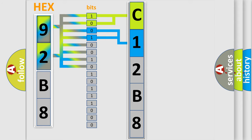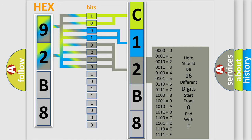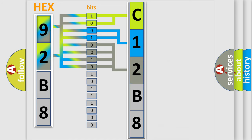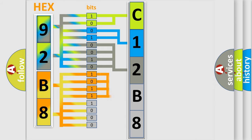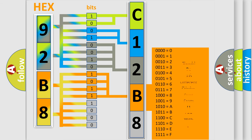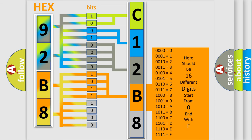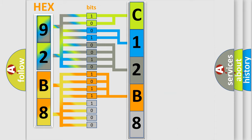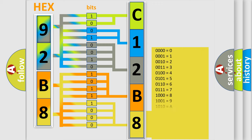The last bits of the first byte define the third character of the code. The second byte is composed of a combination of eight bits. The first four bits determine the fourth character of the code, and the combination of the last four bits defines the fifth character. A single byte conceals 256 possible combinations.